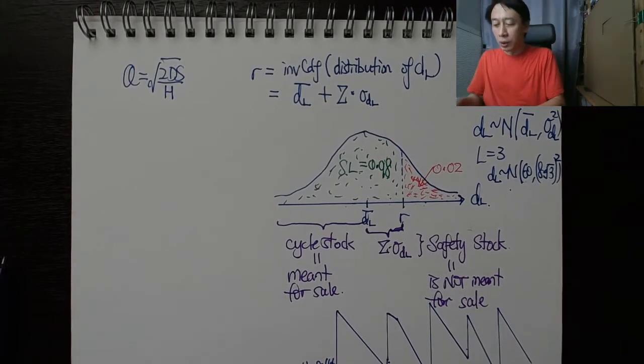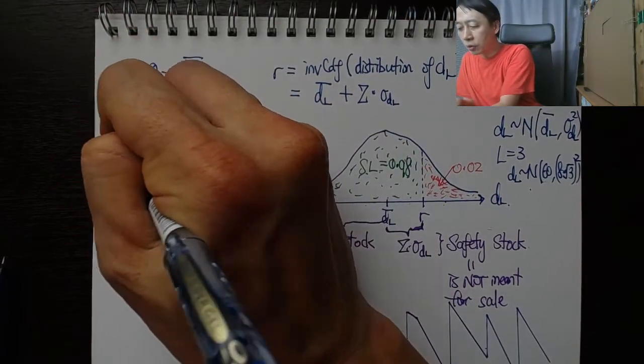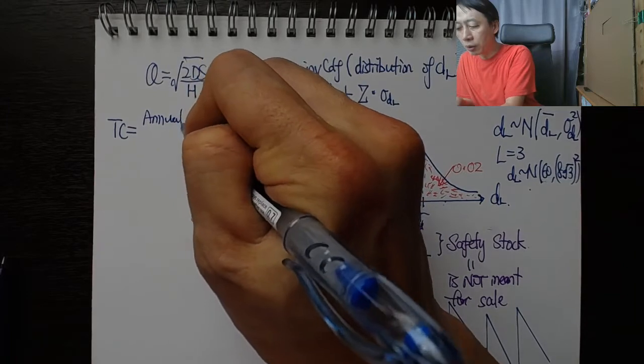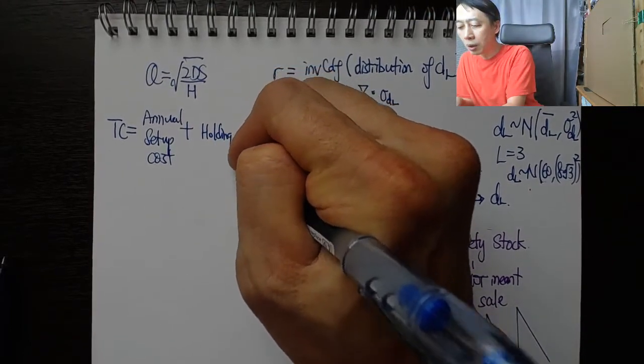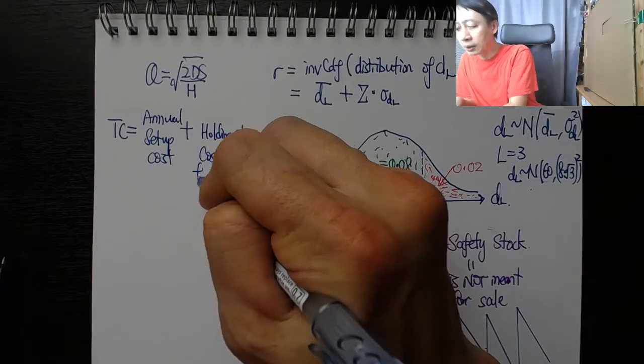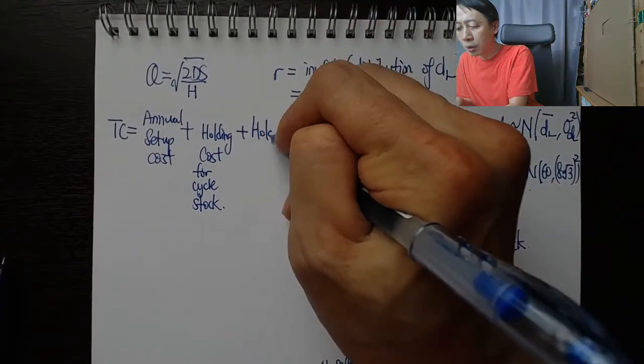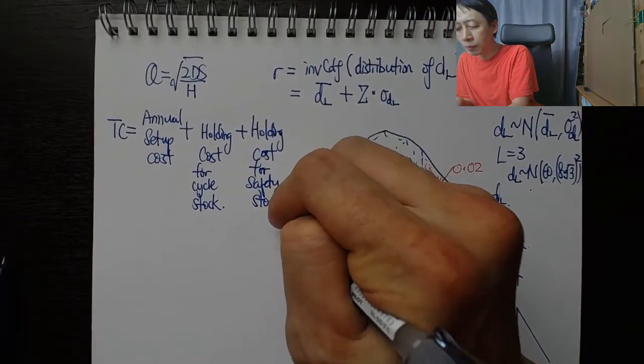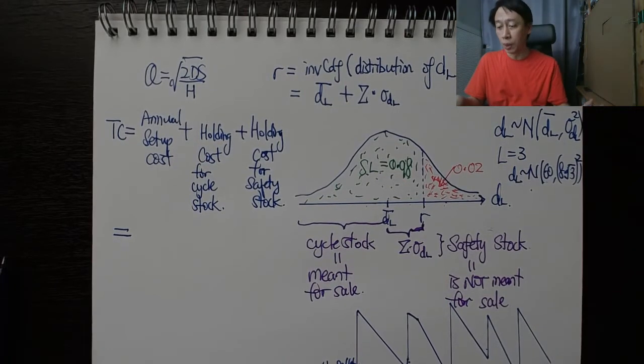To talk about our cost, we'll fall back on our discussion of the EOQ formula, where we said that the total cost is the sum total of annual setup cost plus annual holding cost. And that is the annual safety stock holding cost—holding cost for cycle stock just to differentiate between the two, and holding cost for safety stock.